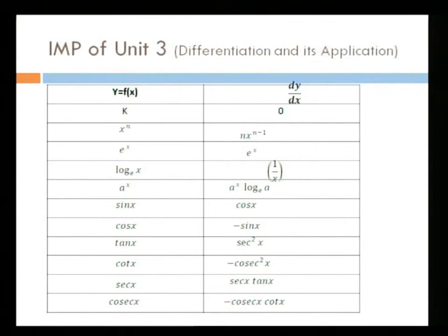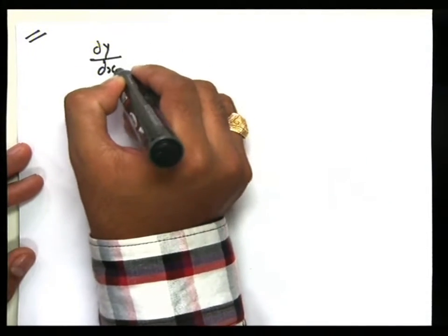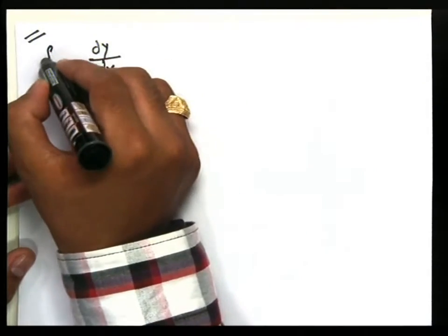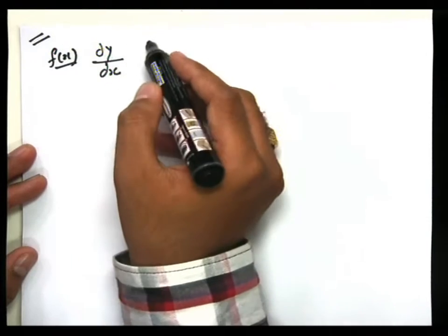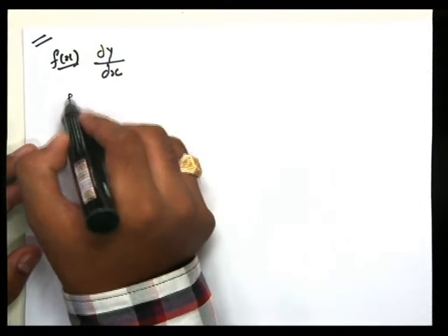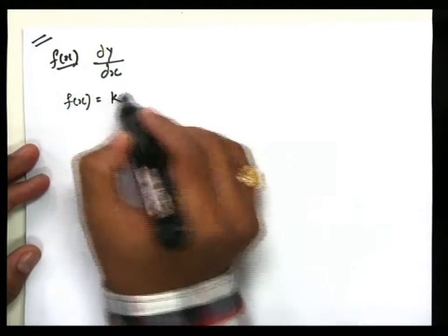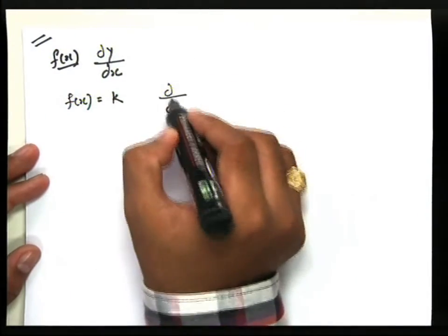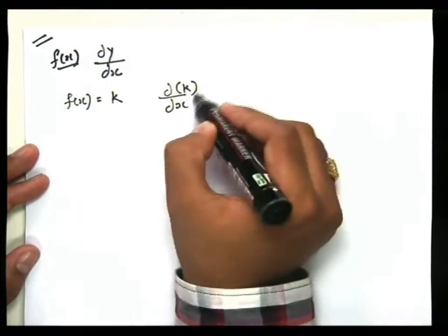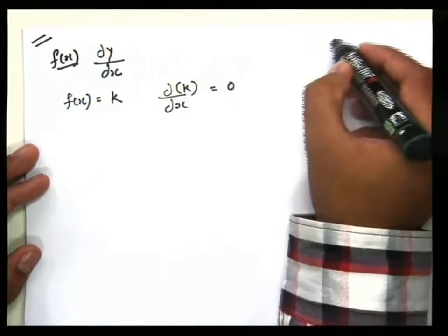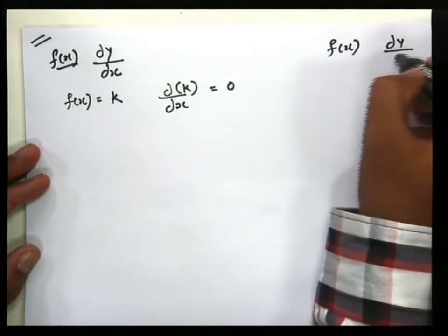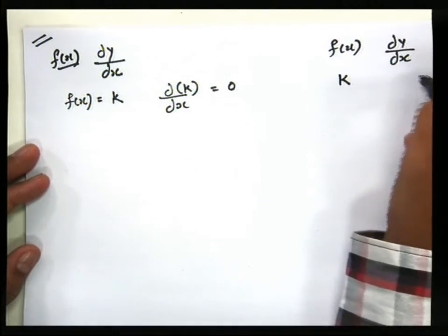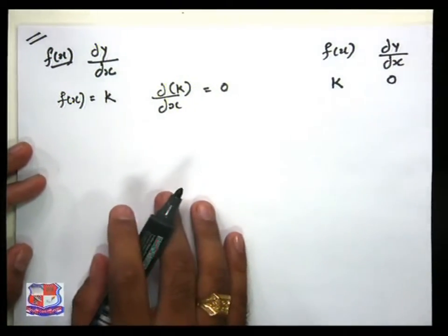Here f of x equals f of x and we want to find dy by dx. This is the very basic formula. So we write dy by dx for f of x — any value we want to find with differentiation. Suppose f of x equals k, then we want to find dy by dx. This is called dk by dx equal to 0. So this is the rule: when the input is a constant k, the differentiation is 0.